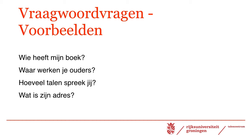Wie heeft mijn boek? Waar werken je ouders? Hoeveel talen spreek jij? Wat is zijn adres? Meaning: who has my book? Where do your parents work? How many languages do you speak? What is his address? As you can see, the structure is always: interrogative pronoun, verb, subject, the rest.